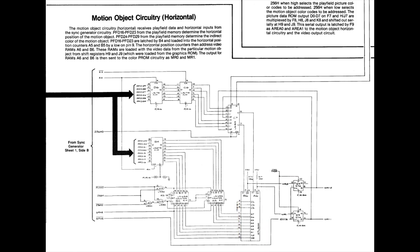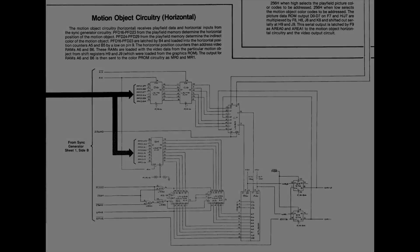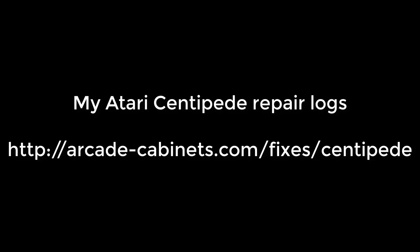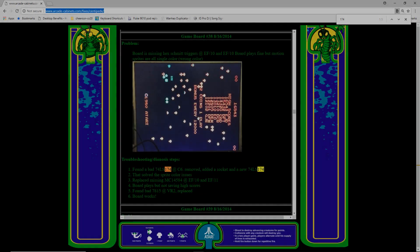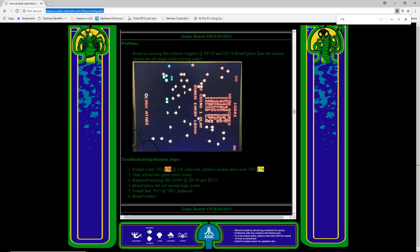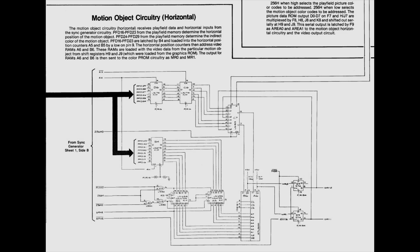Initially I thought I was getting a bad signal, but I wasn't. I remembered having a problem like this before on another board, so I went to look at my notes. On one of the boards I repaired previously — specifically game board number 38 on that web page — I had a similar problem where all the motion sprites were just a single color. I found that the problem was a bad 74LS174 right here on the schematics.